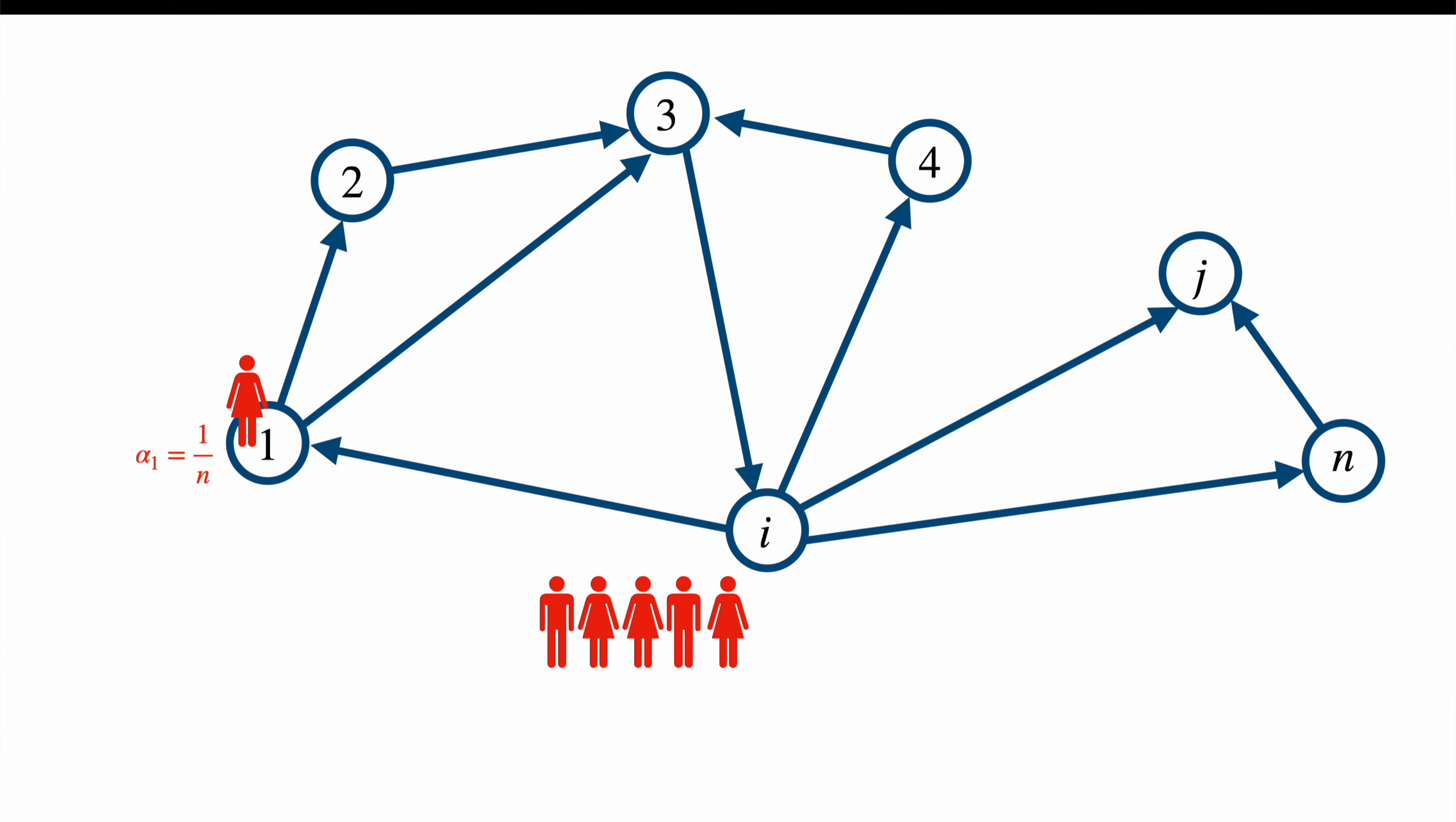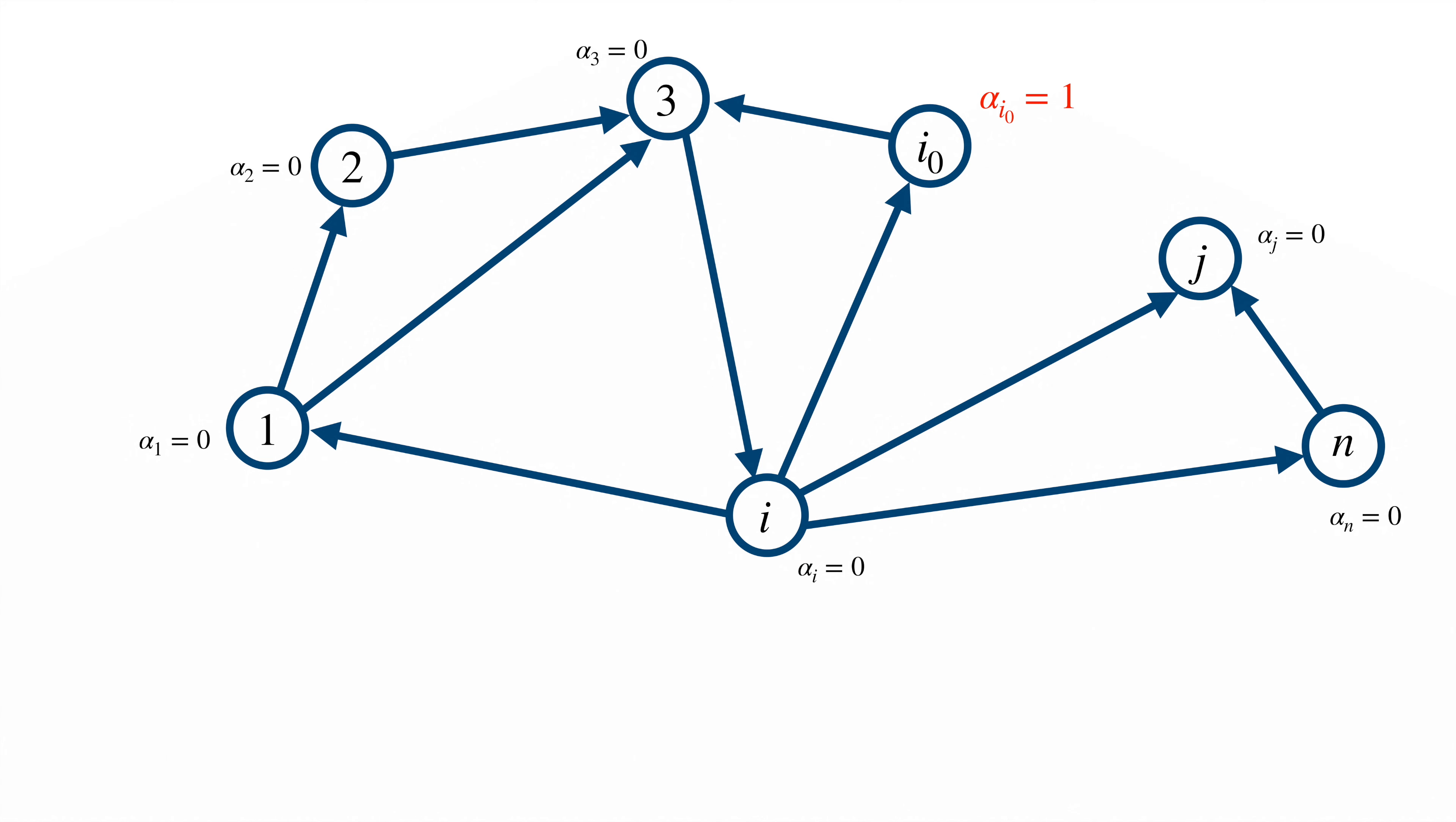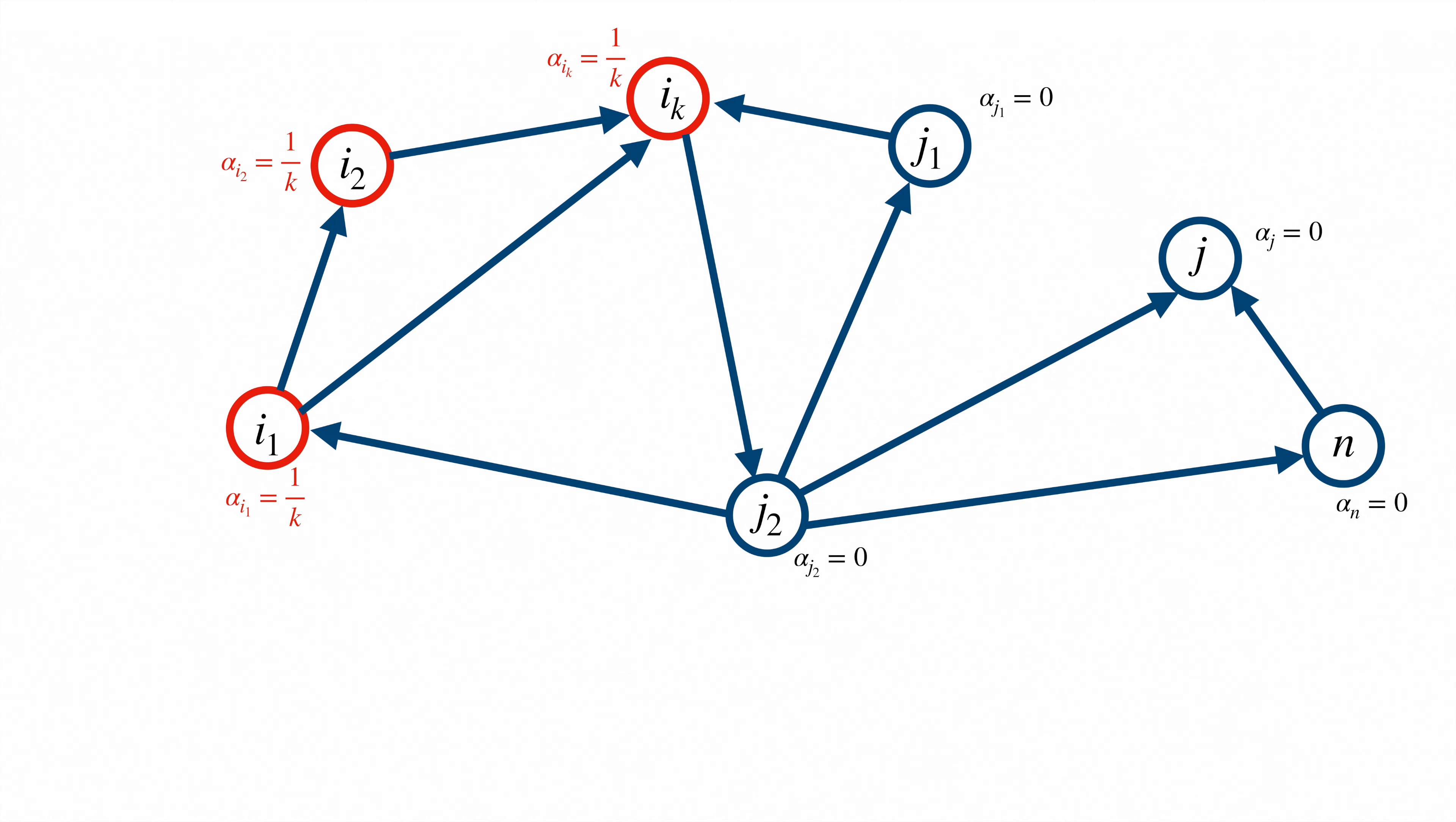It now remains to choose two things. The teleportation distribution alpha 1 to alpha n and the parameter epsilon. Let's start with the teleportation distribution alpha. So in practice many choices are possible. The standard choice is the uniform distribution alpha i equal to 1 out of n for any page i. This means that you can be teleported anywhere with the same probability. Another possible choice is to set alpha i0 is equal to 1 for some page i0 of your choice and alpha i is equal to 0 for all the other pages i. In this case every teleportation leads to page i0. This gives a special importance to the page i0.